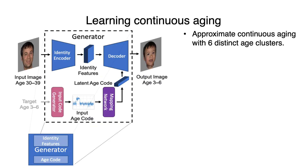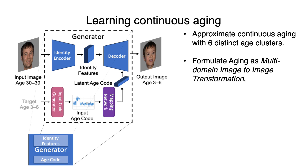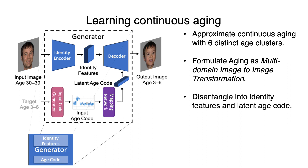We achieve continuous lifespan age transformation by approximating continuous aging with six different age classes. We formulate aging as a multi-domain image-to-image transformation. Our generator disentangles between age and identity. We encode identity features from the input image, then given a target age class, we use a mapping network to produce a latent age code for that target class. Our decoder fuses the latent age code with the identity features using StyleGAN2 modulated convolutions.